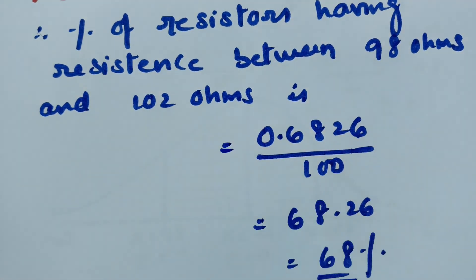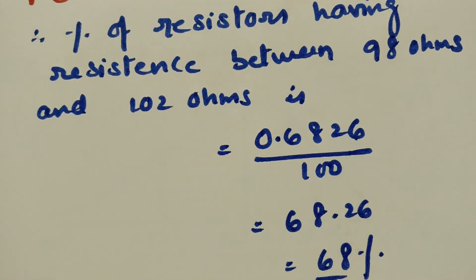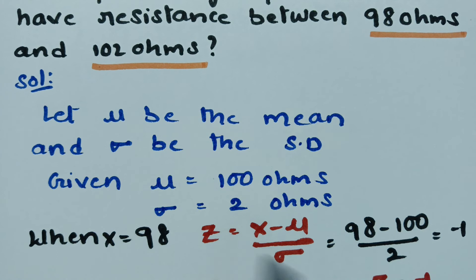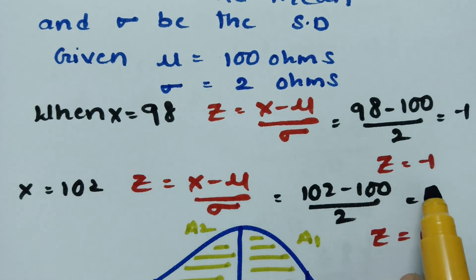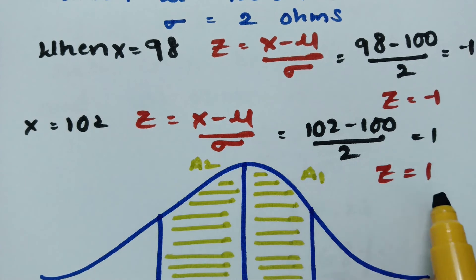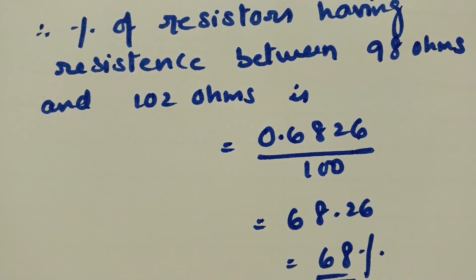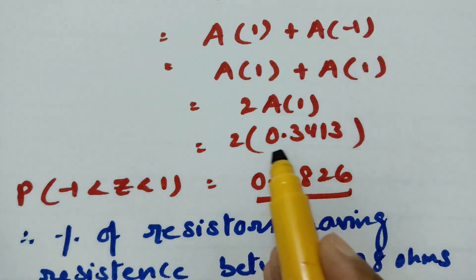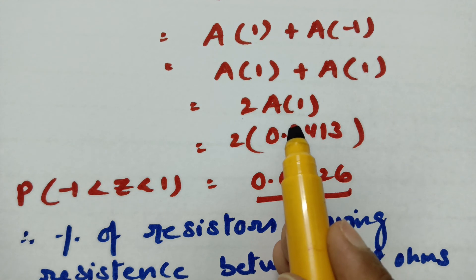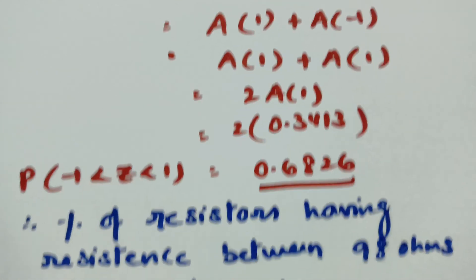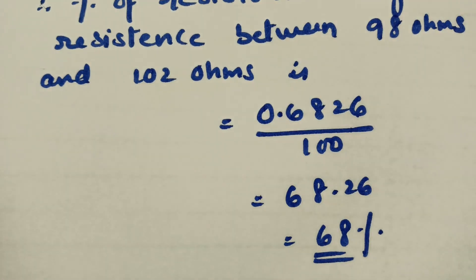In summary: with mean μ = 100 and σ = 2, for x = 98 we get z = −1, and for x = 102 we get z = +1. We plotted the graph with areas A1 and A2. The total area = 2 × A1. From the table, the area from z = 0 to z = 1 is 0.3413, giving a final answer of 68%. Thank you for watching.